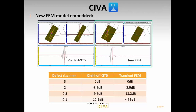In SIVA, for a planar rectangular defect, you stay in the same simulation module but in the simulation settings under 'interactions/flaw,' you find the model selection. Kirchhoff GTD is the default. If necessary, you can switch to transient FEM for that specific defect.